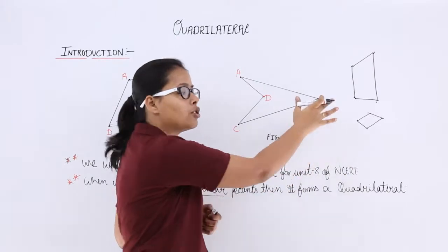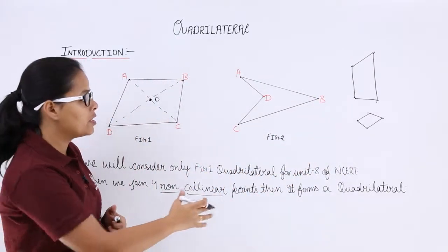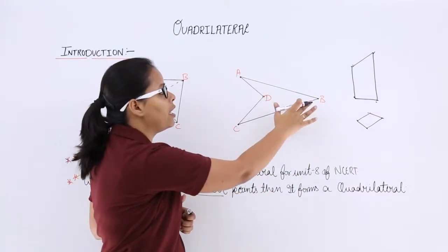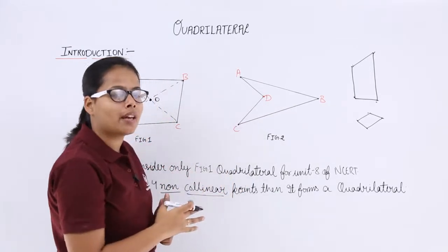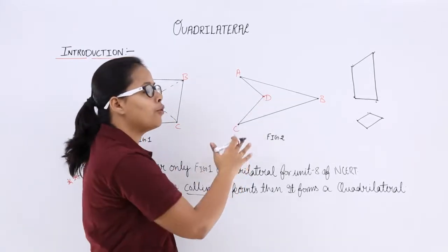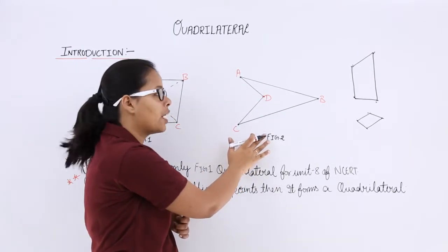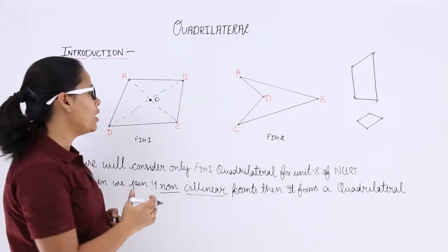It can look like anything. So these all are quadrilaterals. Figure 2, four points are in such a manner, when you join all these four points this will form a quadrilateral like this.